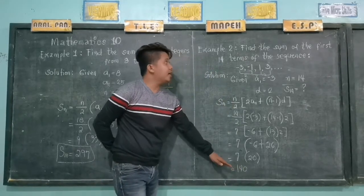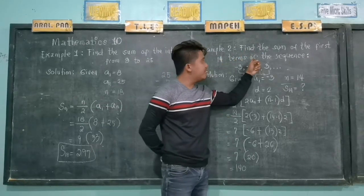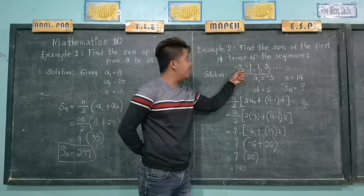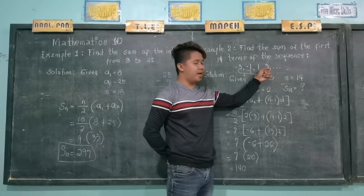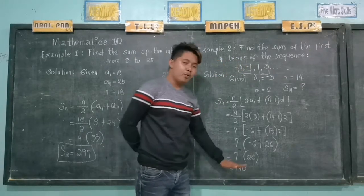So now, 140 is the sum of the first 14 terms of the sequence, negative 3, negative 1, 1, 3, until the 14th term. We have 140.